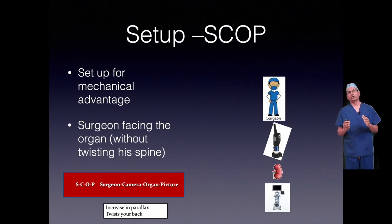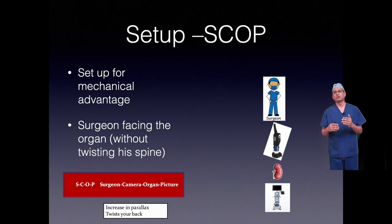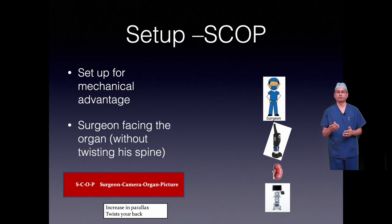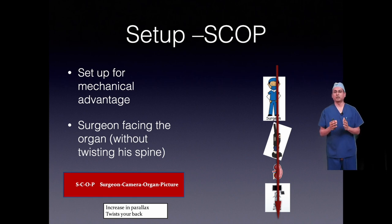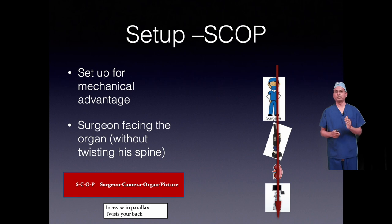Start with the basic ergonomics — learning the port ergonomics, the equipment, and everything else. Set up the entire thing according to mechanical advantage. The basic concept is that the surgeon should be facing the organ without twisting his spine. The SCOP principle: S for surgeon, C for camera, O for organ, P for picture — meaning the display monitor. All four should be in a straight line, which decreases parallax, avoids twisting your back, and increases efficiency. Parallax is the enemy of hand-eye coordination and depth perception, and every effort should be made to reduce it.